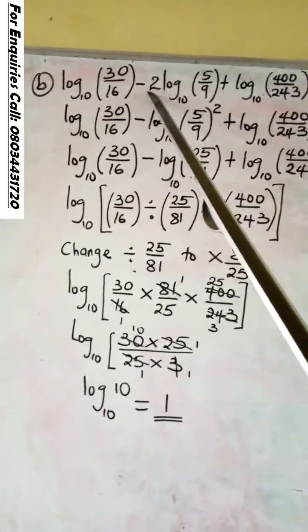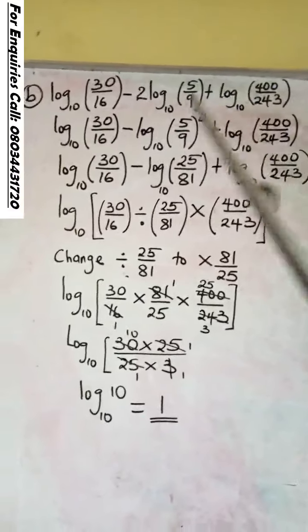So what you do now is to remove that 2. You send it to the top of 5 over 9 as power. Remember it in our law. So when you do that, it is going to be 5 over 9 raised to the power 2. In the other one, there is no value there. You go ahead.